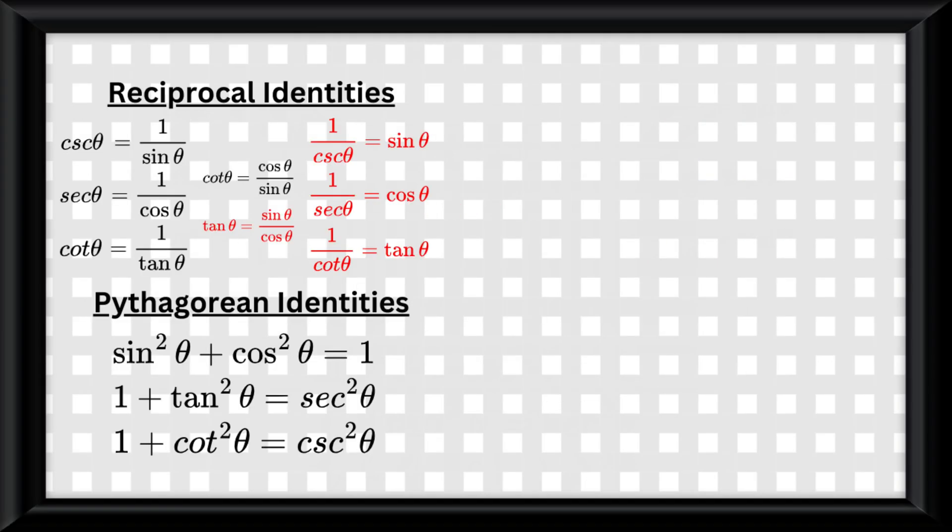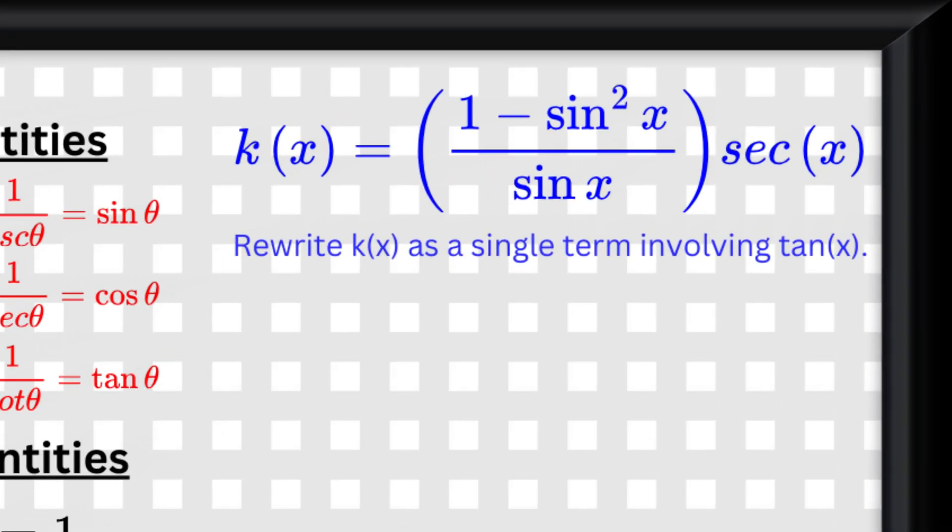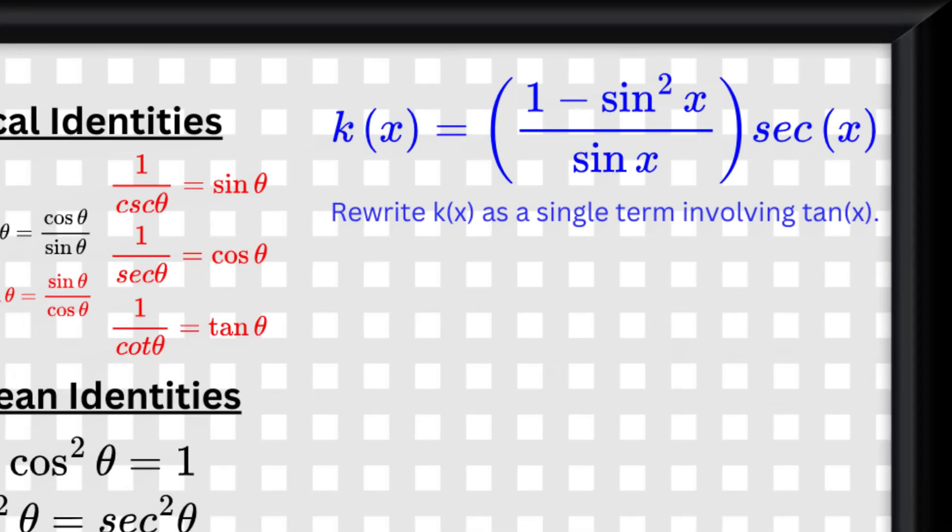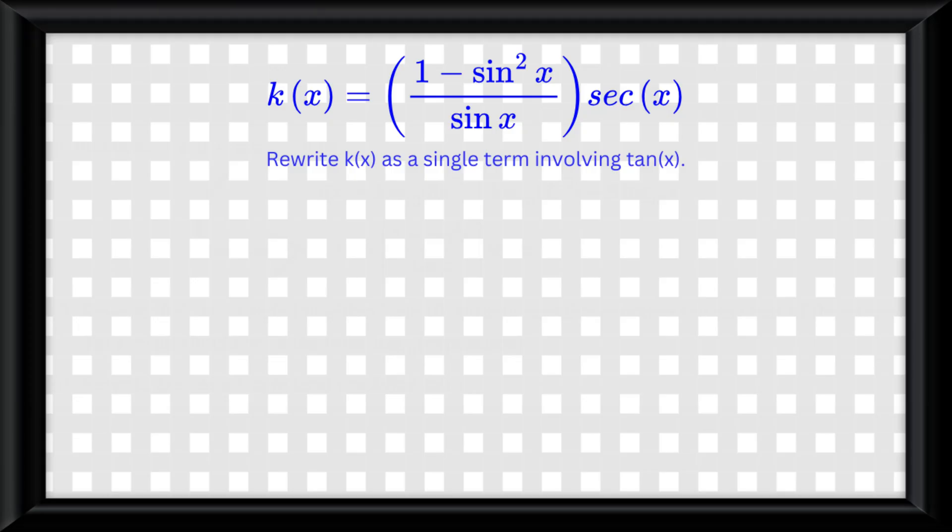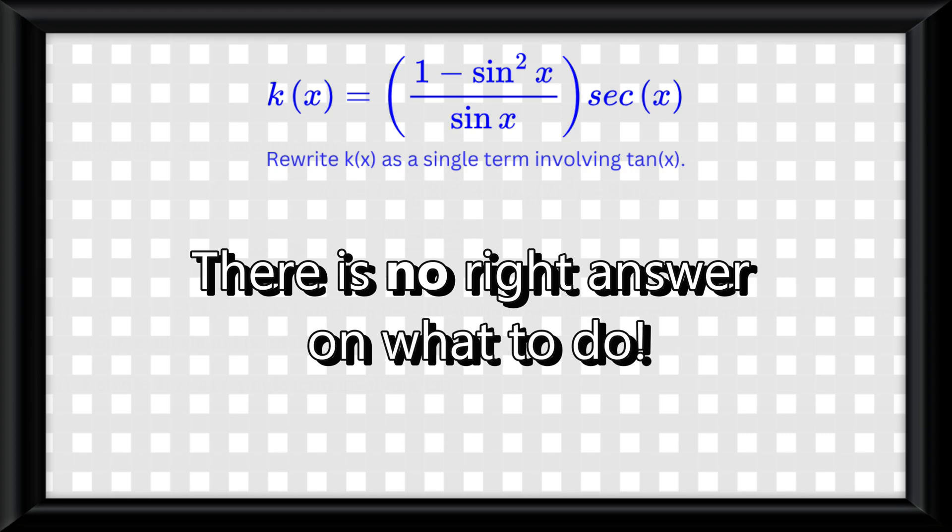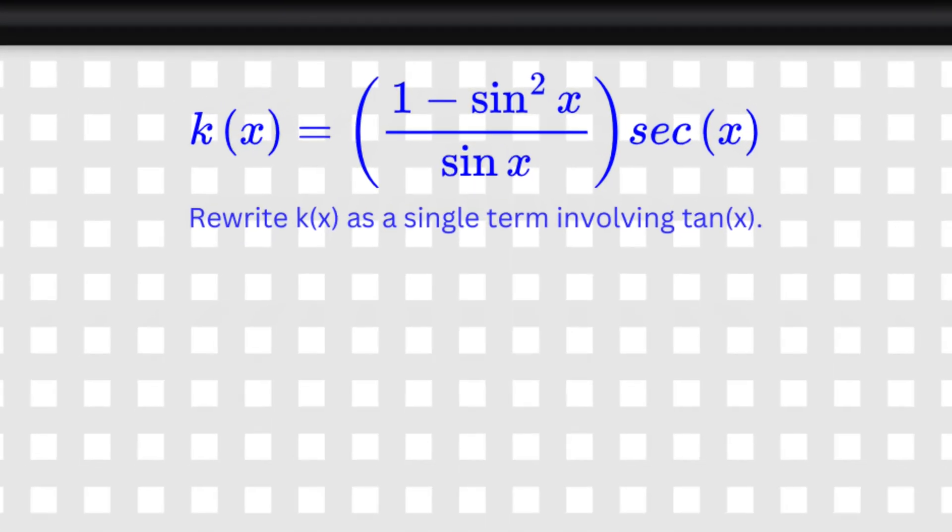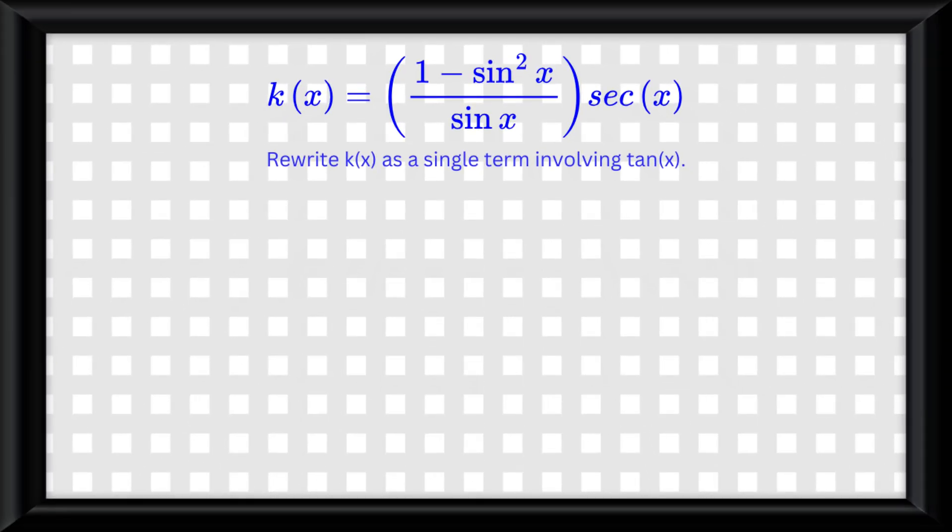When you see an identity like this and it asks you to rewrite it, in this case in terms of tangent, let me show you how you do it. Also, this question was taken from the 2024 AP exam. So the truth is, there is no right answer on what to do. You could do things completely different from me and get the same exact answer. I'll just show you how I'd do it.